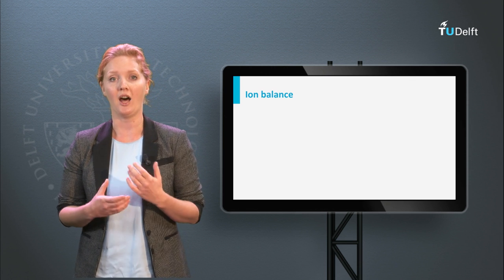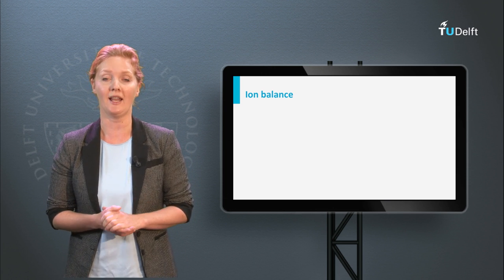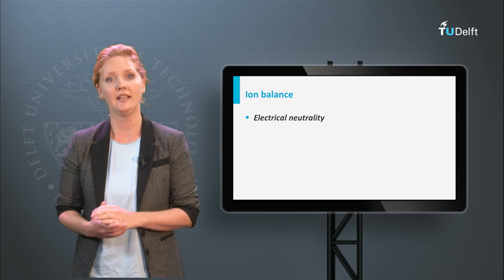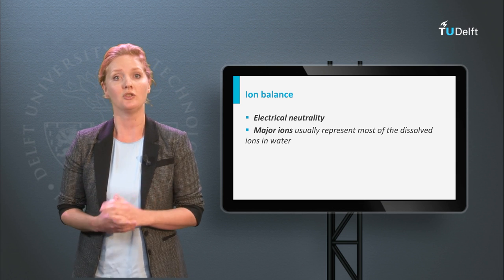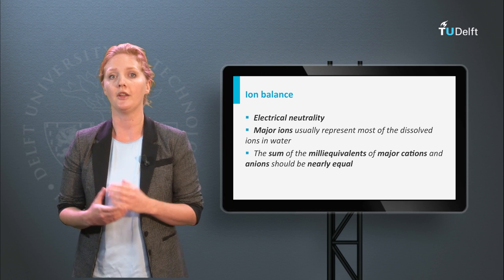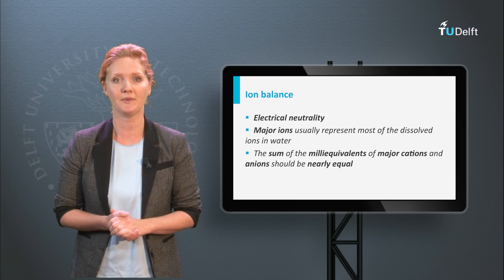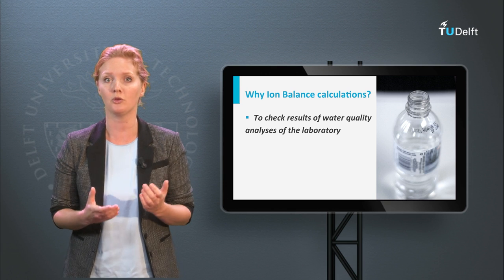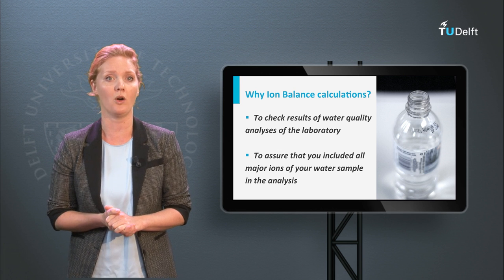Let's get started with the ion balance of a water sample. The ion balance is based on the principle of electrical neutrality, meaning that the equivalent concentration of positively charged ions — the cations — is equal to the equivalent concentration of negatively charged ions — the anions. Major ions, such as sodium and chloride, usually represent most of the dissolved ions in water. So the sum in milliequivalents of major cations and anions should be nearly equal. This relatively simple calculation will help you to check if water quality analyses were performed correctly by a laboratory and to assure that you included all relevant major ions in your water sample analysis.